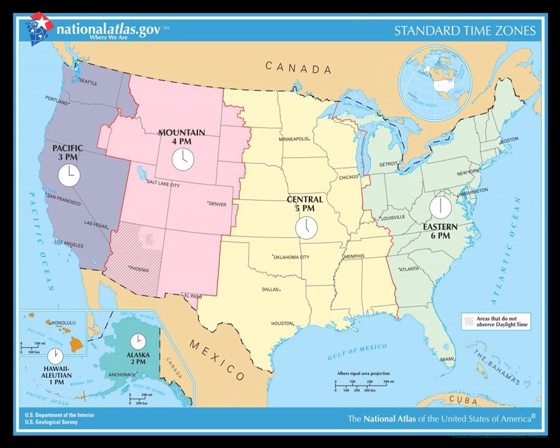The history of standard time in the United States began November 18, 1883, when United States and Canadian railroads instituted standard time in time zones. Before then, time of day was a local matter, and most cities and towns used some form of local solar time, maintained by some well-known clock, for example on a church steeple or in a jeweler's window.